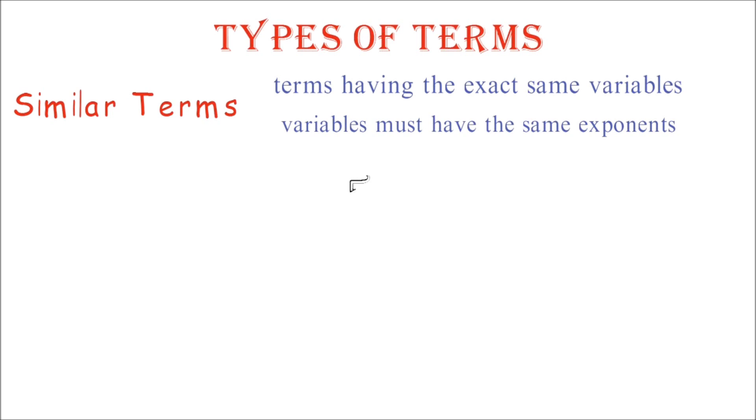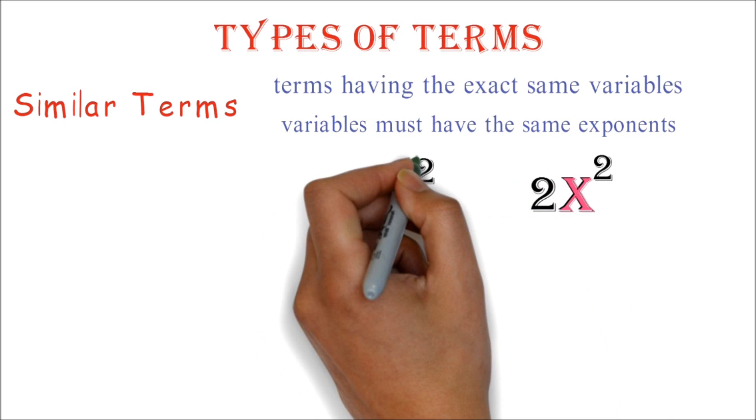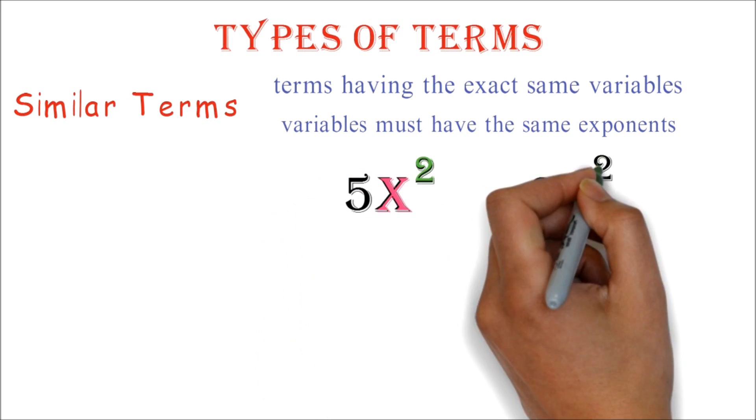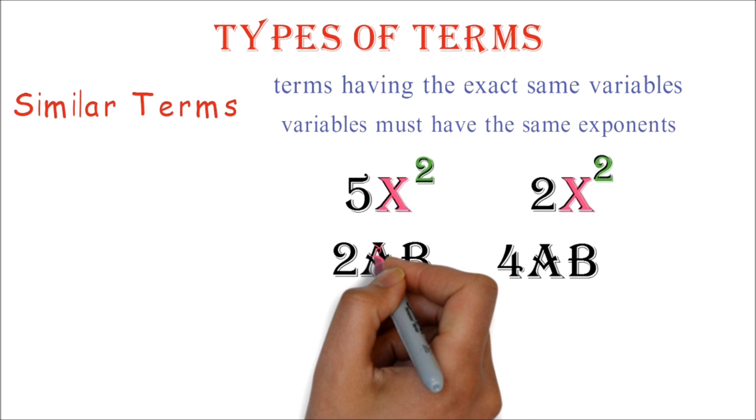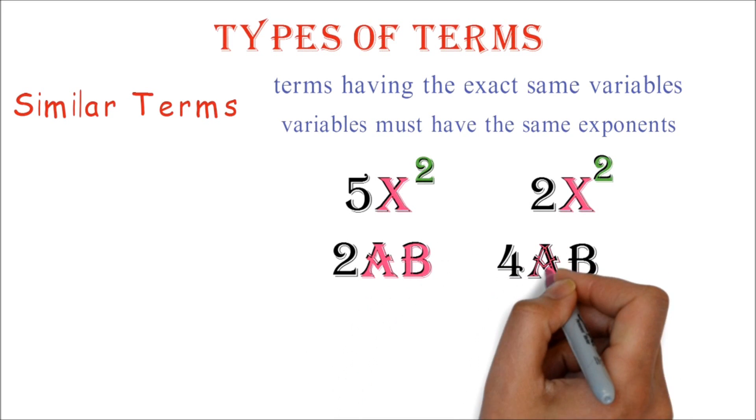Example, when we look at 5x squared and 2x squared, we'll notice that both have the letter x and the x has the same exponent too. So, we can say that the terms are similar. 2ab and 4ab are also similar terms because they both have the same variables or letters, and those variables have the same exponents.